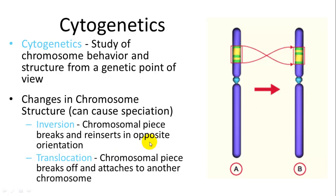Another one is called translocation, where a chunk is moved into a different part of a different chromosome, making that chromosome smaller. Both of these can help cause speciation. If it is a lethal mutation it will cause death in the gametes, but if it is a beneficial translocation it can improve chances of natural selection and create differences between subspecies, which can then cause speciation.